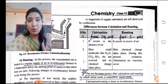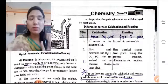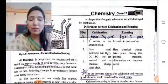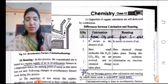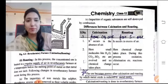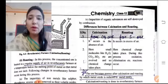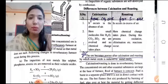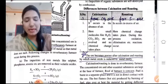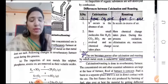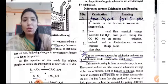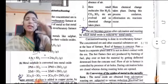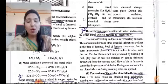Next we have roasting. In roasting, we also take concentrated ore and convert it into oxide, but we give a regular supply of air — it is done in the presence of air, unlike calcination which is done in absence of air. In roasting, non-metals like sulfur, phosphorus, and arsenic are removed as volatile oxides.